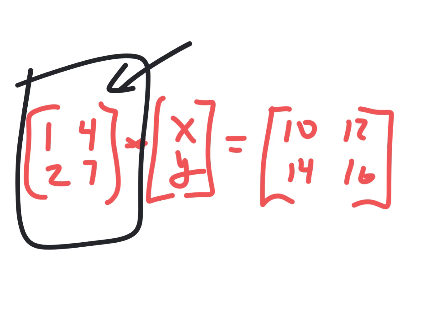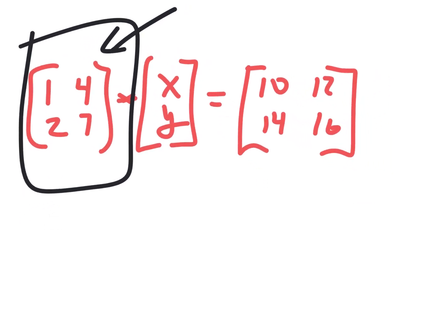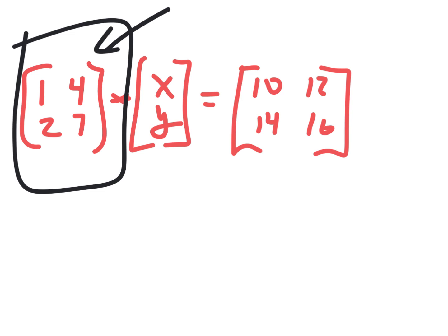Please copy this problem exactly: 1, 4, 2, 7 times x, y equals 10, 12, 14, 16. I'm going to give you the formula for finding the determinant. You will have to do one of these by hand. You might be thinking — I thought we had a calculator on the test — yes, but we're going to put a letter in there, and the calculator won't be able to do it. So you'll have to know how to do this by hand.